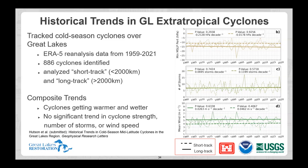There's a question in the chat: is there any trend in latitude of ETCs — extra-tropical cyclones? We looked at it and we are seeing evidence that storm tracks are possibly shifting northward. We don't have error estimation or statistical significance on that yet, but it is possible that these storms are shifting slightly northward in the Great Lakes region.